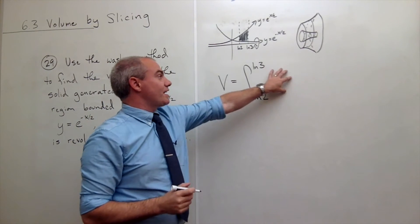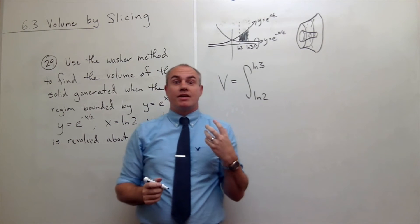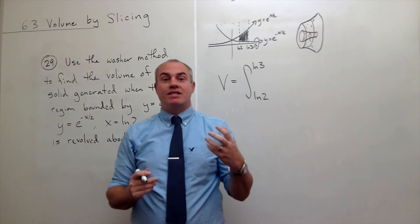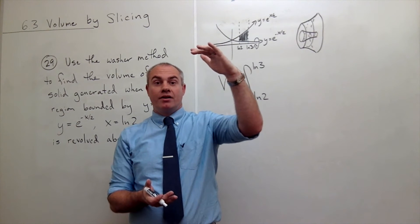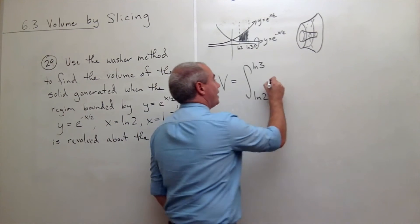Inside, if this were the disc method, I'd put pi r squared. But this is the washer method. So I want to put pi times the outer radius squared minus the inner radius squared. So I want a pi in here for sure. And then I want the outer radius squared.